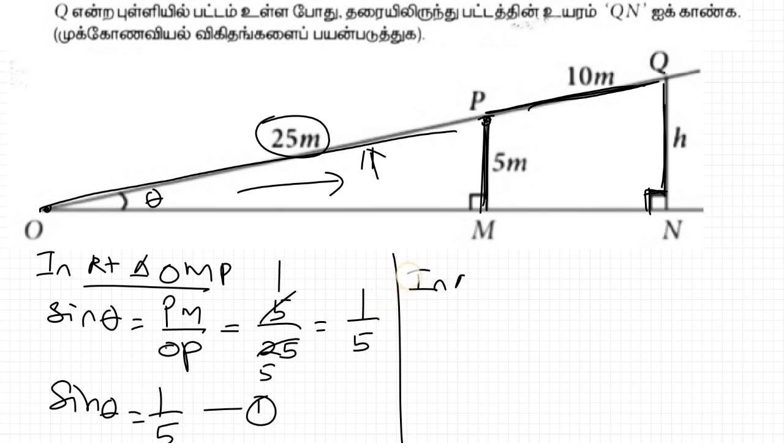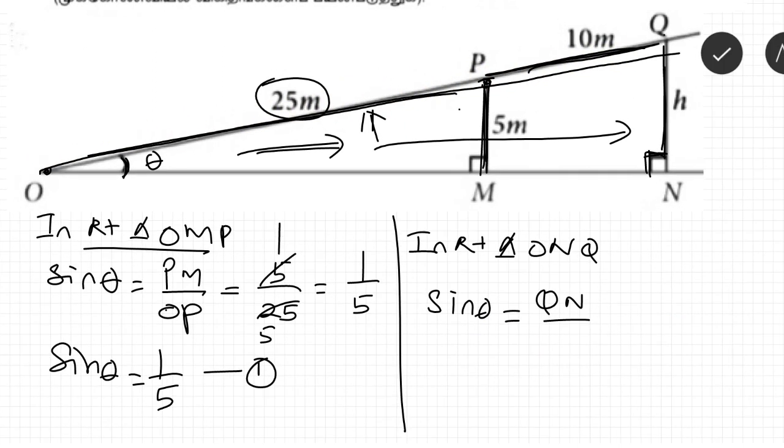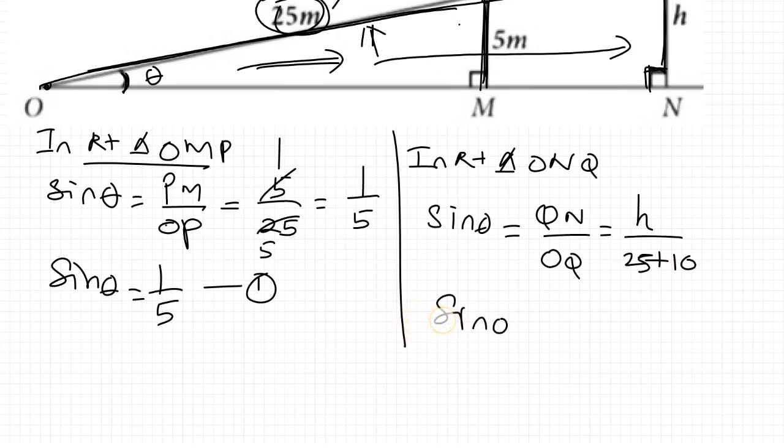In the right triangle ONQ, sin theta equal to the opposite side QN and hypotenuse. In the right triangle, sin theta equal to h by 25 plus 10 is 35. This is equation number 2.